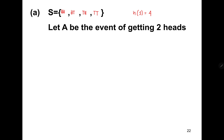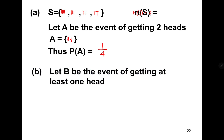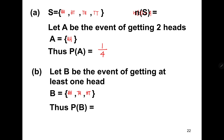Let A be the event of getting 2 heads, so we have H, H. Therefore, the probability of A is equal to 1 over 4. For our second question, let B be the event of getting at least one head. At least one head includes: head-head, head-tail, and tail-head. So the probability of event B is equal to 3 over 4.